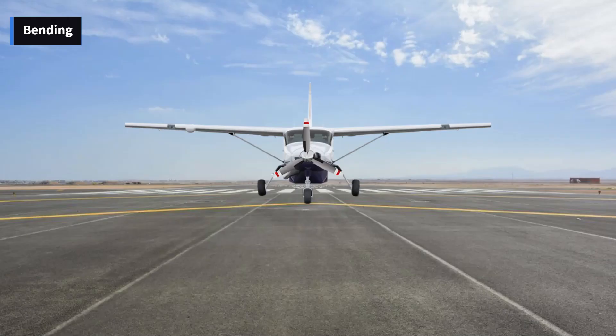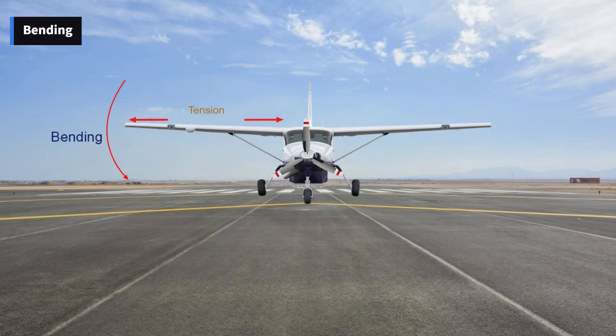When the airplane is on the ground sitting on its landing gear, the force of gravity tries to bend the wing downward, subjecting the bottom of the wing to compression and the top of the wing tension.